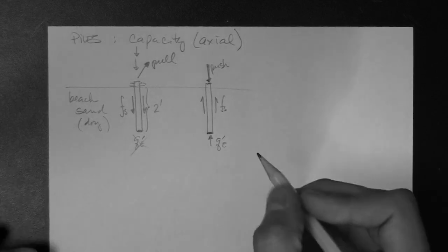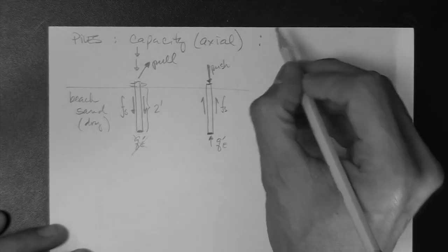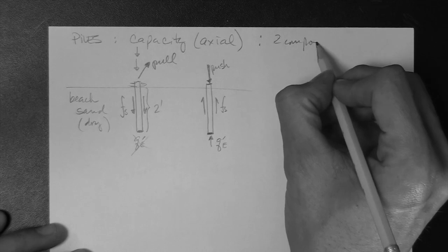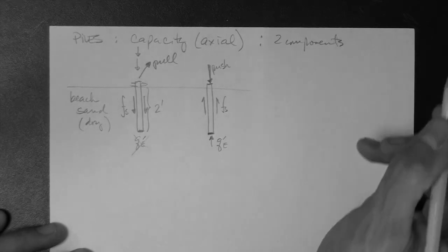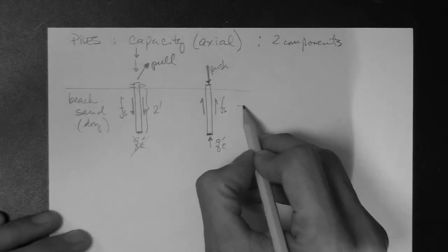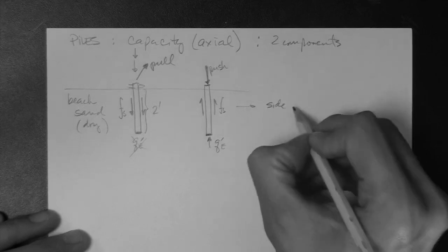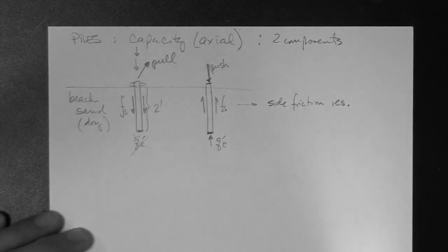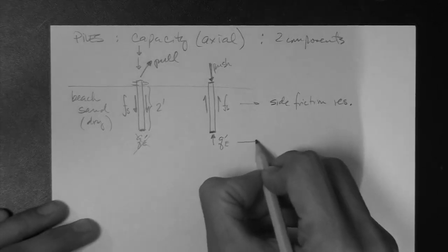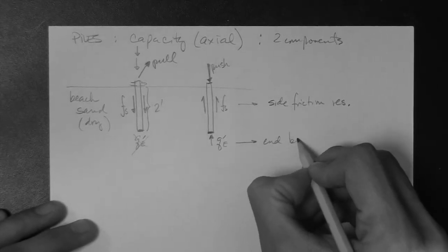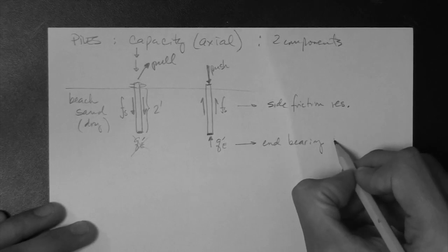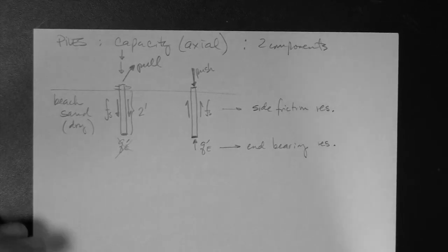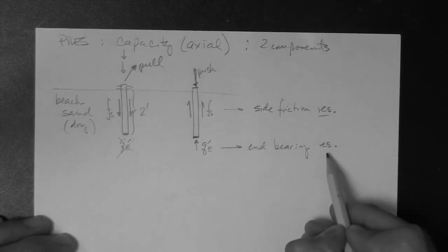Great. So, right here, you can see the two components. Remember, we said that there were two components. This is the first one: side friction resistance. This is the second one: end bearing resistance. Notice the word resistance. That means that these two are stresses.